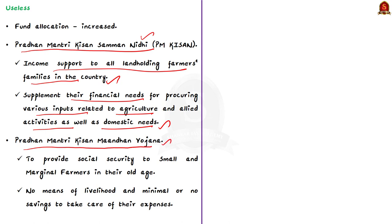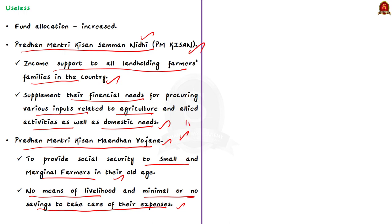Secondly, Pradhan Mantri Kisan Mandhan Yojana provides social security to small and marginal farmers in their old age, under conditions where they have no means of livelihood and minimal or no savings. In the current budget, fund allocation towards these two schemes has been increased, but the author says it is not going to help for asset generation in the long term.